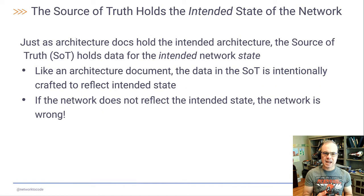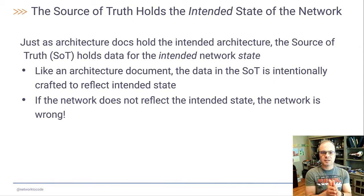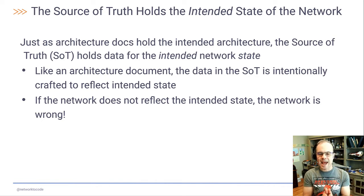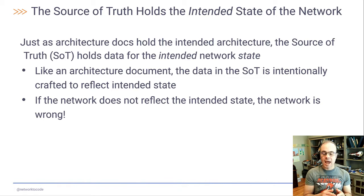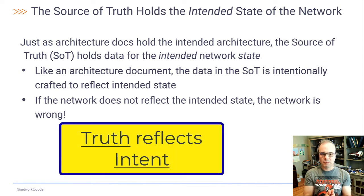Along the same lines, the source of truth holds the intended state of the network. Just as those architecture documents hold the intended architecture, the source of truth holds data on the intended state of the network. And so if the network does not reflect that intended state, the network is wrong. That is why we call it a source of truth, or you could also call it a source of intent.